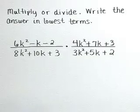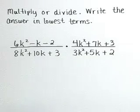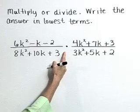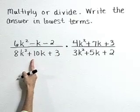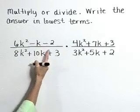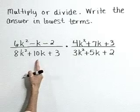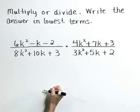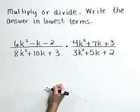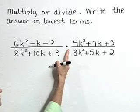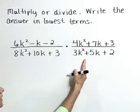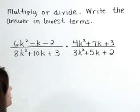Multiply or divide. Write the answer in lowest terms. Here we have a multiplication problem where we have the rational expression 6k squared minus k minus 2 over 8k squared plus 10k plus 3 times the rational expression 4k squared plus 7k plus 3 over 3k squared plus 5k plus 2.